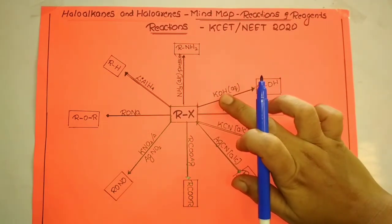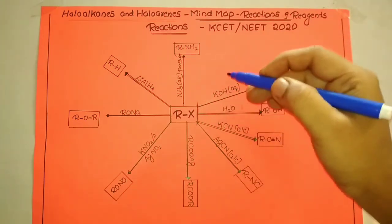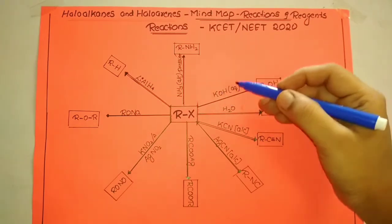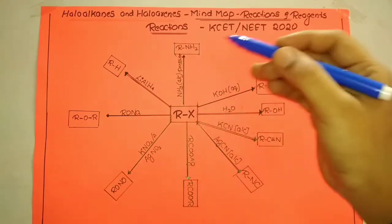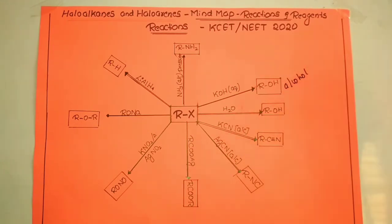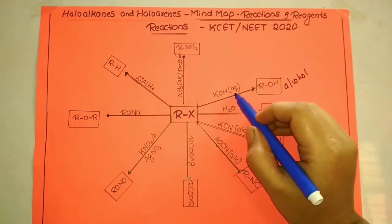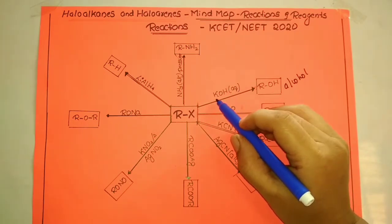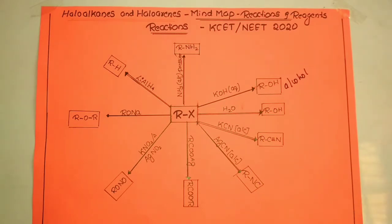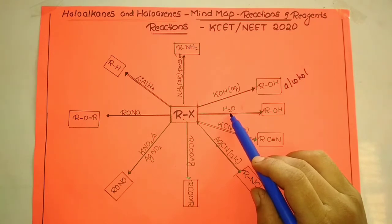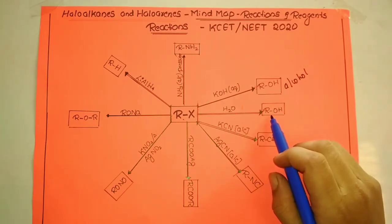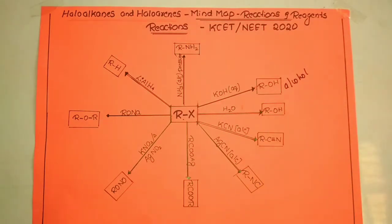When alkyl halide is treated with aqueous potash — potassium hydroxide dissolved in water — the product will compulsorily be alcohol. Also, when alkyl halide is treated with water, that is hydrolysis of alkyl halide, it also results in the formation of the respective alcohol. So these are two methods to prepare alcohol from alkyl halide.